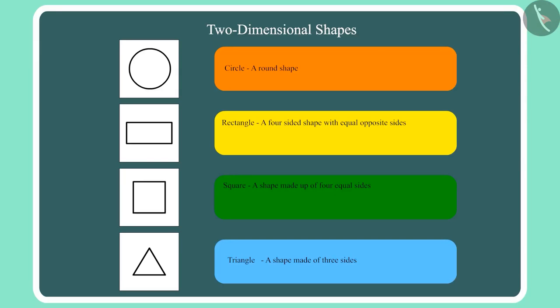Children, today we recognize a few two-dimensional shapes and their names. Like we call this round shape a circle. Triangle. The four-sided shape with equal opposite sides is called a rectangle.